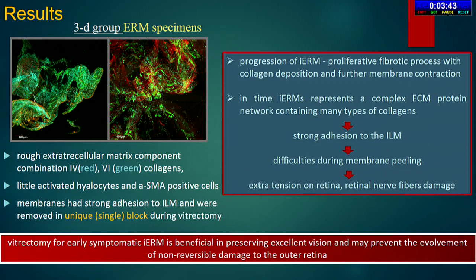In the current study, we showed that progression of IRM can be considered as a proliferative fibrotic process with collagen deposition and further membrane contraction. Increased expression of transforming growth factors induces the differentiation of different cells into myofibroblasts, granting IRM their contractive properties. These membranes represent a complex network containing many types of collagen and have strong adhesion to the ILM, leading to difficulties during membrane peeling and extra tension causing retinal nerve fiber damage.